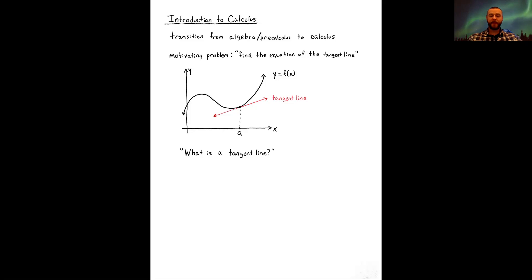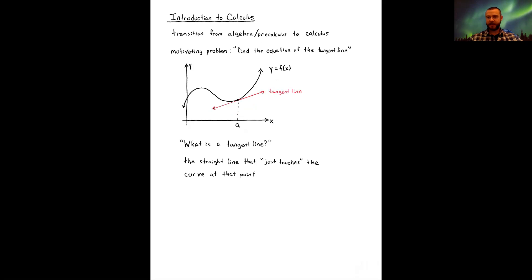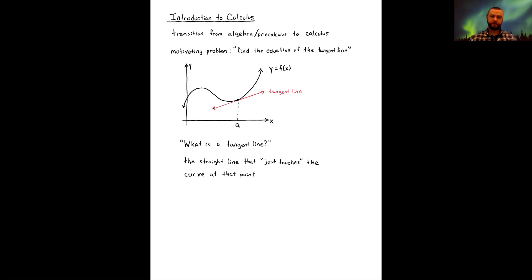We first have to ask: what is a tangent line? I'll give a very basic answer — this is not a complete answer, but we'll develop it further through the course. Roughly speaking, a tangent line is the straight line that just touches the curve at that point. We won't define mathematically what 'just touches' means until later. Notice that the red tangent line just touches the curve.